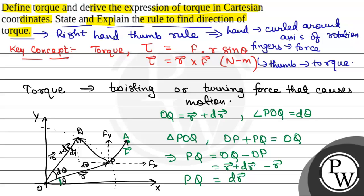So according to right hand thumb rule, we can find out the direction of torque. In this, if hand is curled around axis of rotation with fingers pointing towards the direction of force, then the thumb gives the direction of torque. So this will be the final answer.